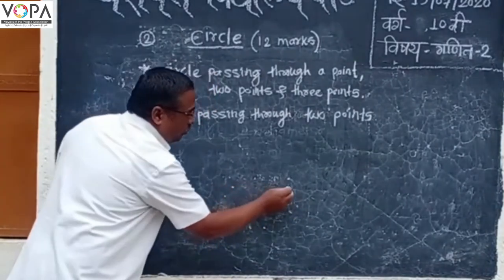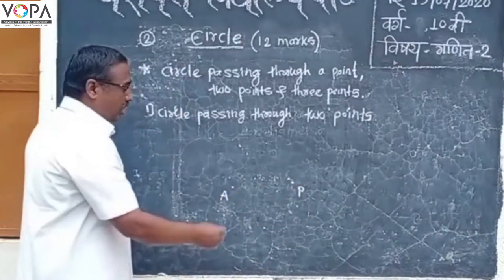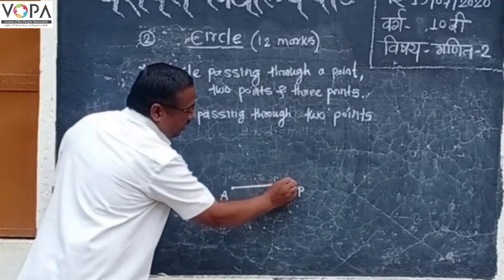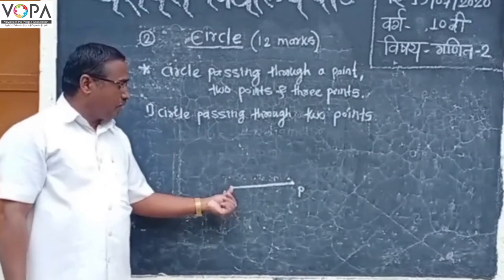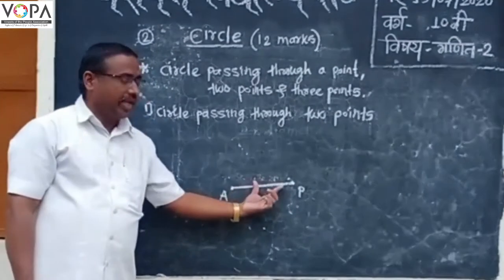Take two points A and P in a plane. Join segment A-P. To draw a circle passing through given points A and P, this is segment A-P.